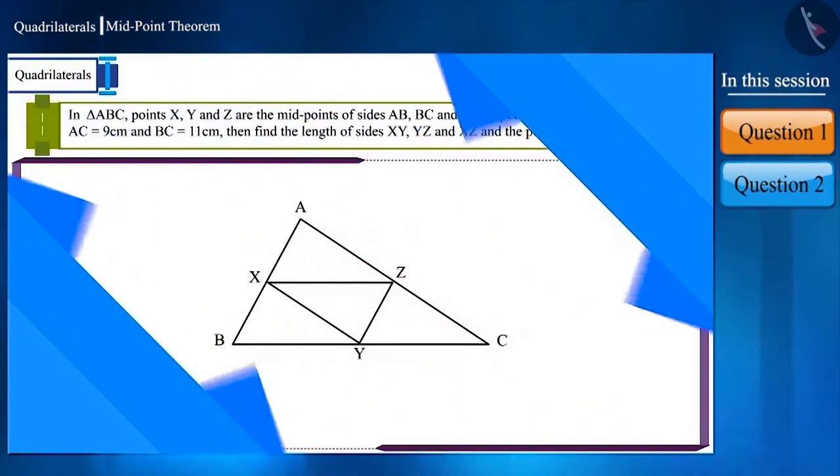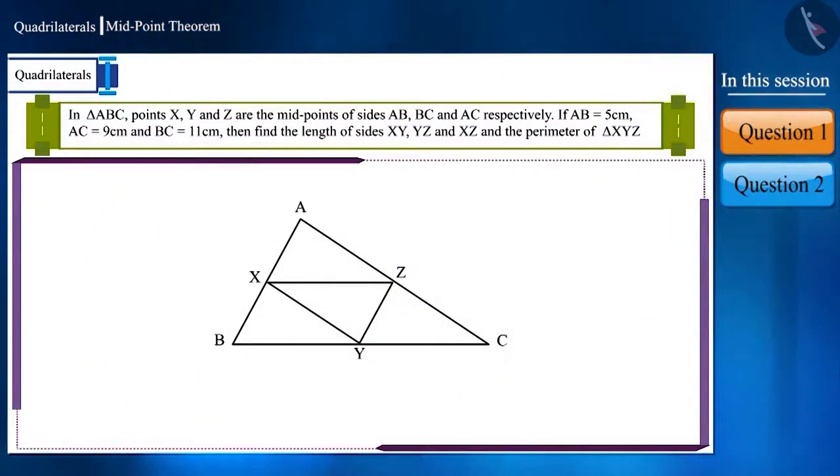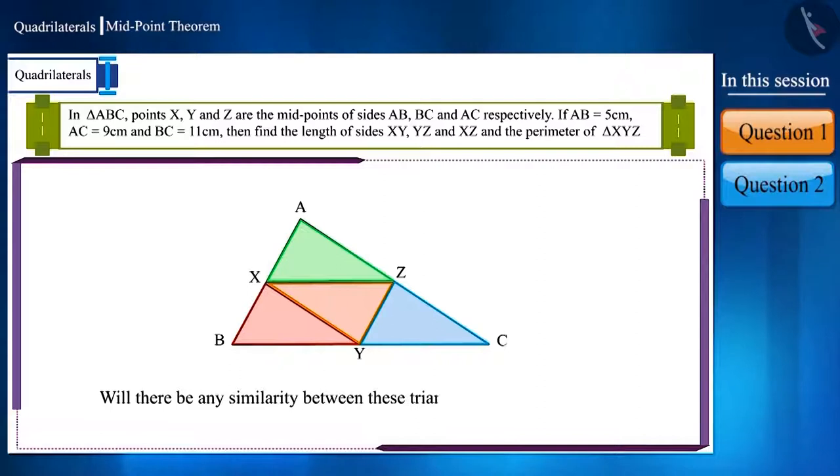Friends, look at the figure carefully. Here, in triangle ABC, four triangles are being formed. What can we tell about these triangles and their perimeter? Think about this question together with your friends. You can also take help from your teacher.